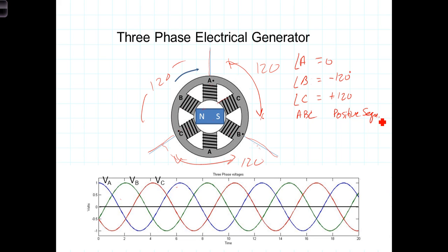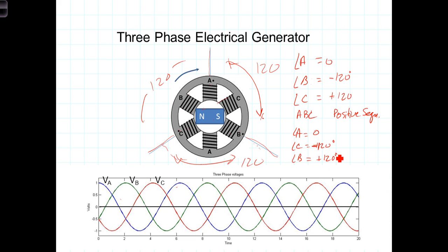On the other hand, if as we're assigning the letters, the A phase is at zero and directly following the A phase we have the C phase at minus 120 degrees, and then the B phase coming along at positive 120 degrees relative to A, that is referred to as an ACB sequence or a negative sequence. This is specified by the power company when electricians are hooking things up — they need to know which phase is leading and which is lagging. Get them backwards and your motor will actually turn in the opposite direction.